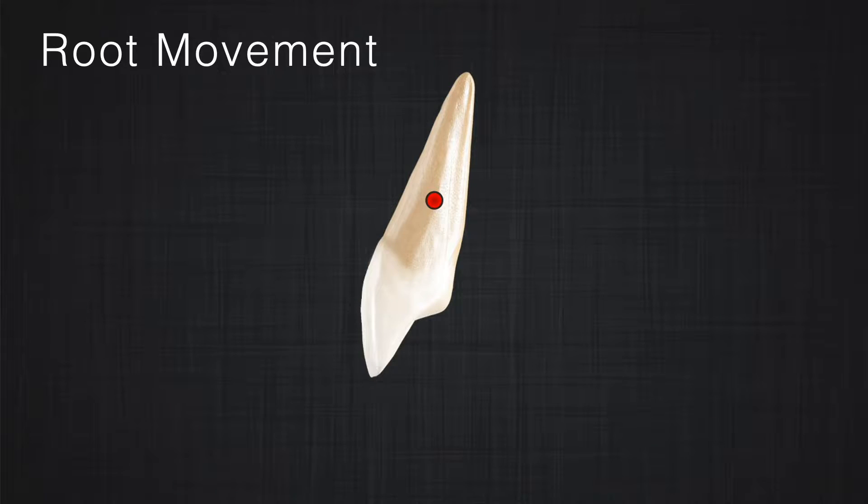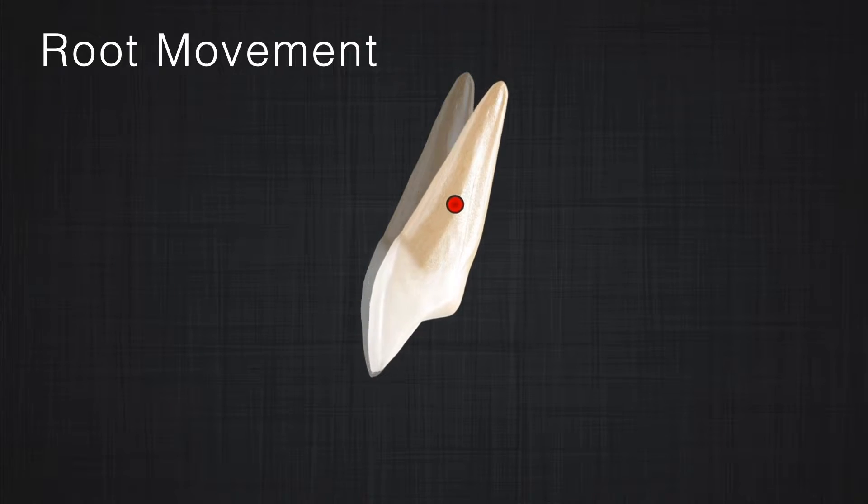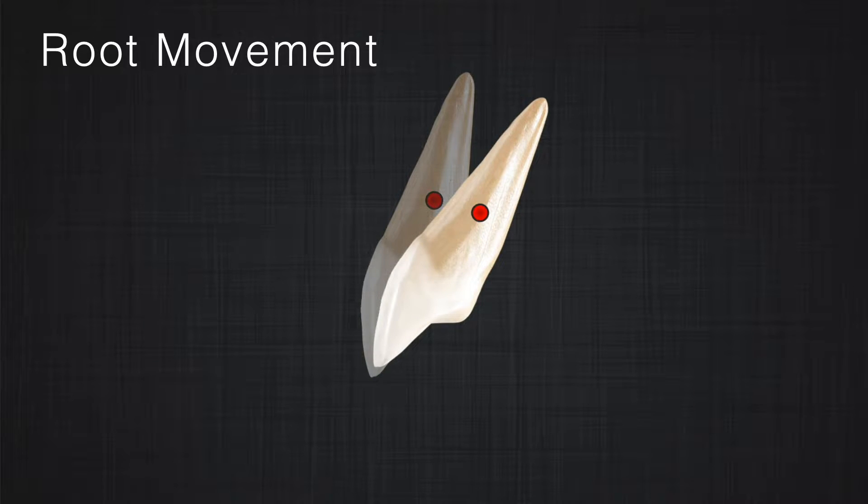The third type of tipping we are interested in is root movement, where it seems the incisal edge has not moved and the root has been moved in one direction. When talking about the different types of tooth movement, it takes time to describe them. Is there an easier way so we can communicate faster?